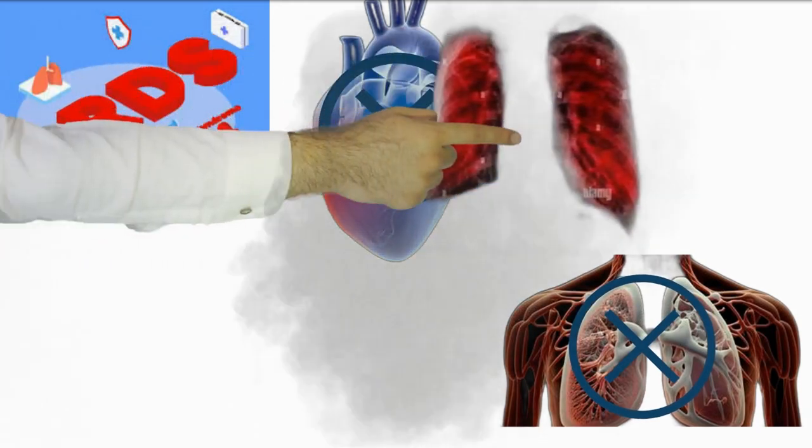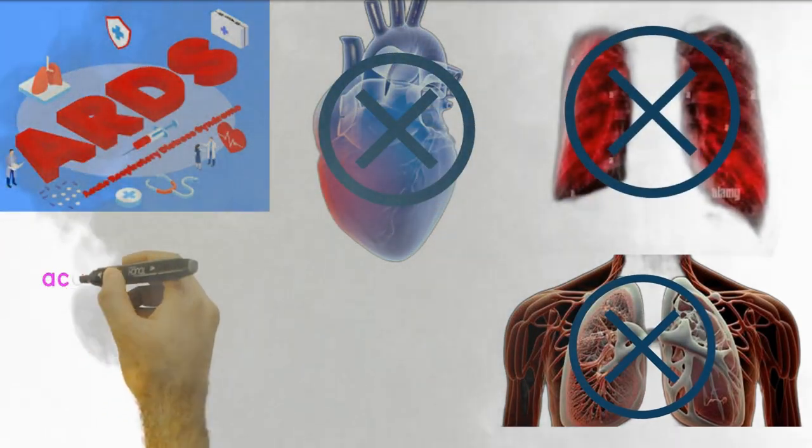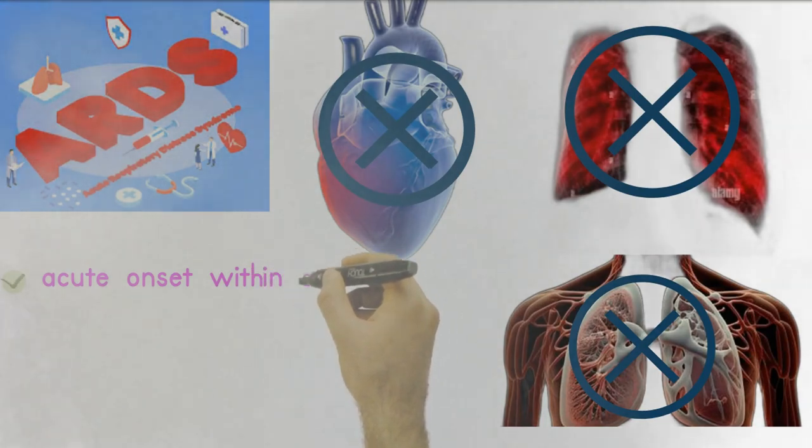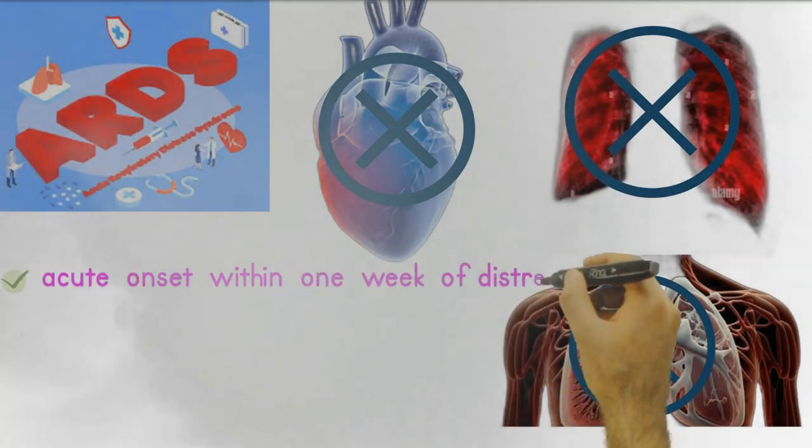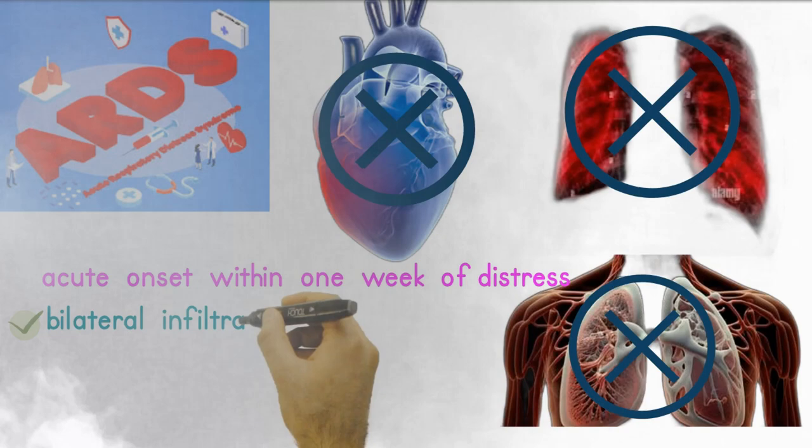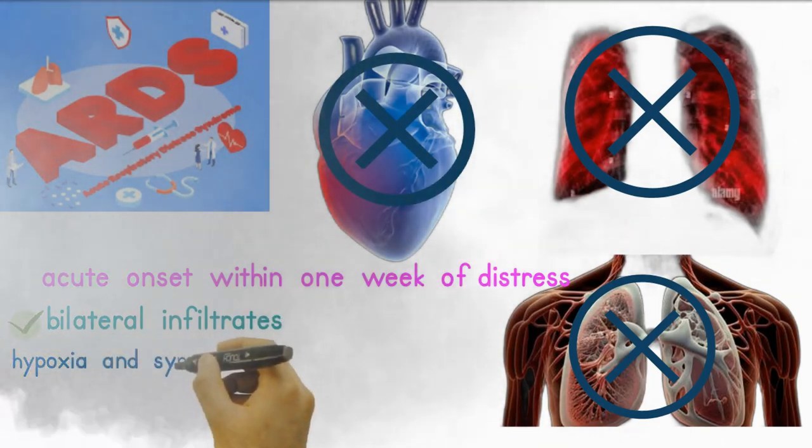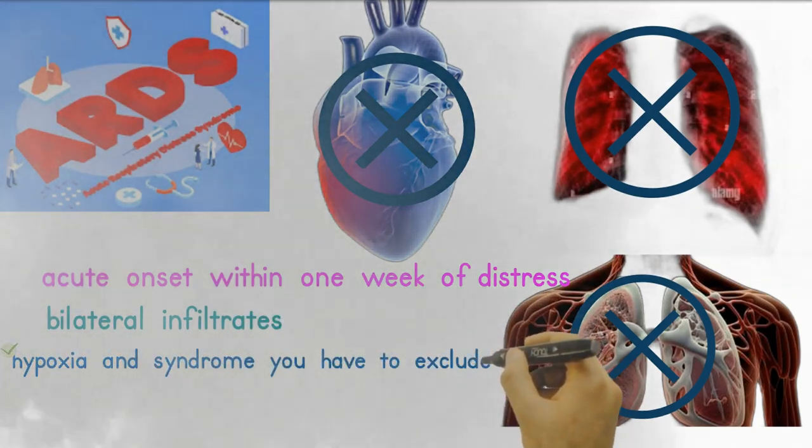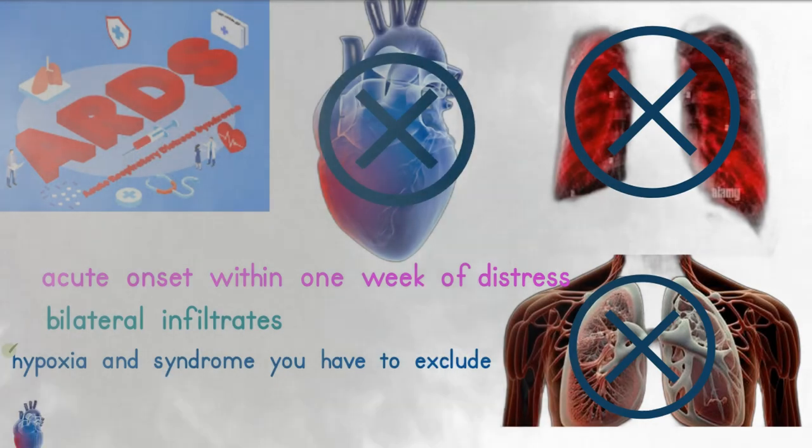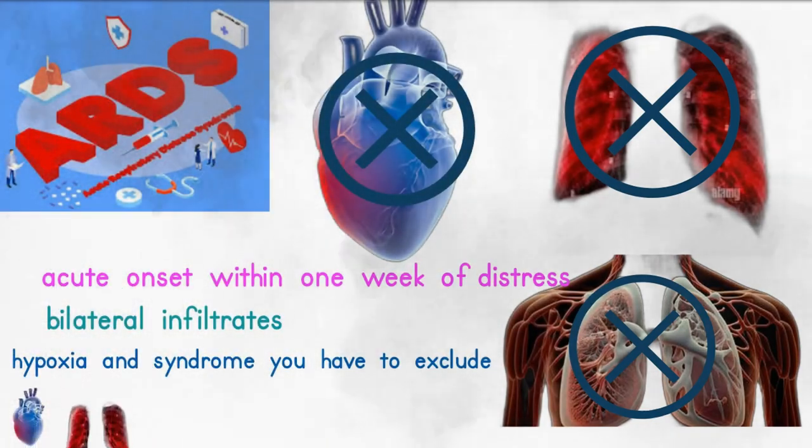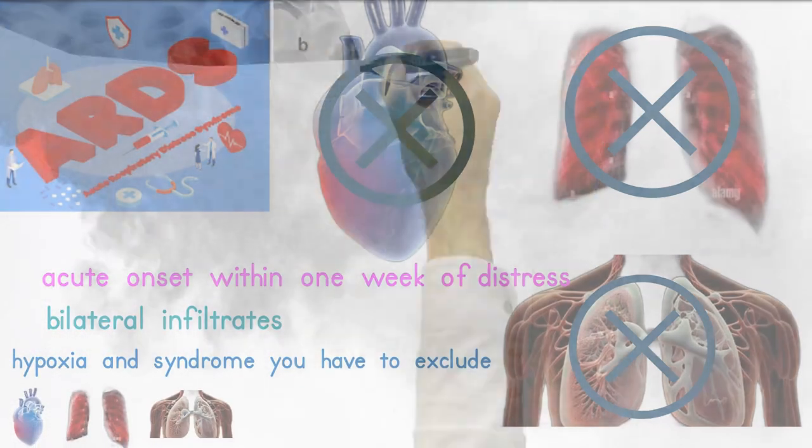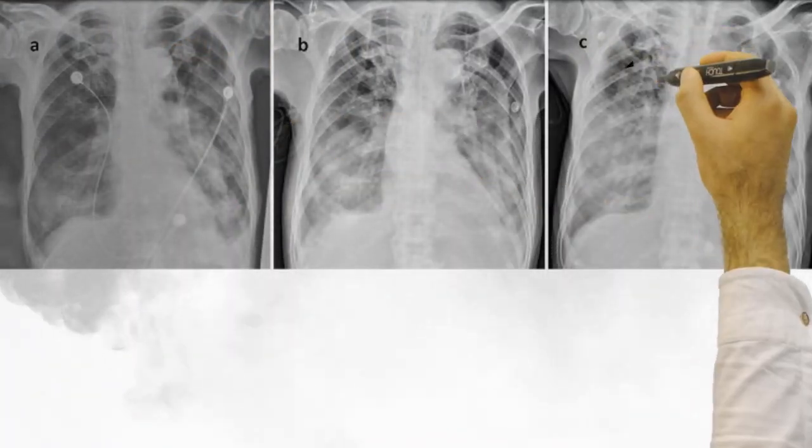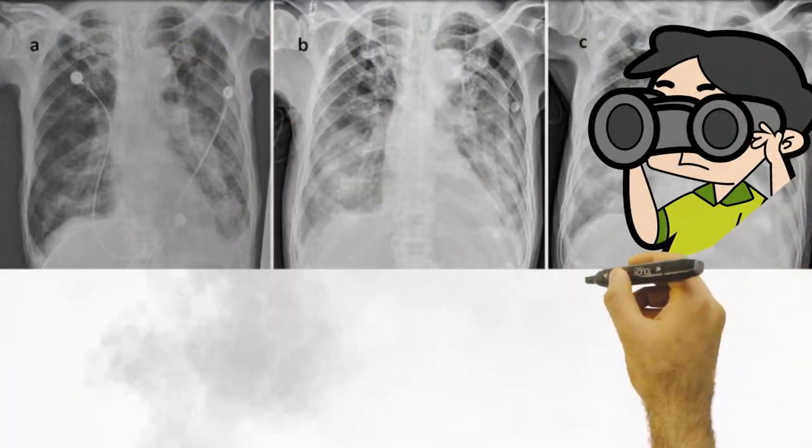In summary, acute respiratory distress syndrome: acute onset within one week, respiratory findings such as chest x-ray showing bilateral infiltrates, distress means hypoxia, and syndrome - you have to exclude the cardiac cause and volume causes which may be associated with the chest x-ray findings that may also cause hypoxia.